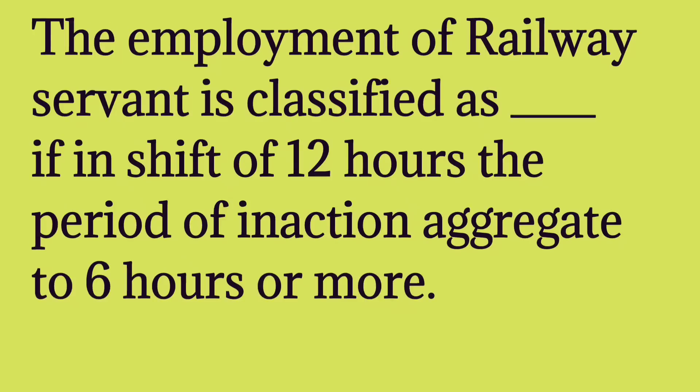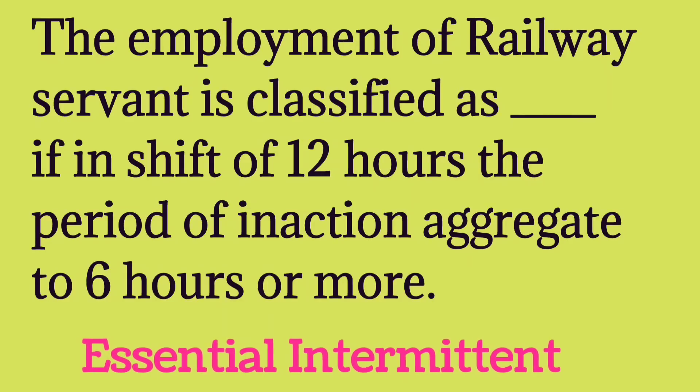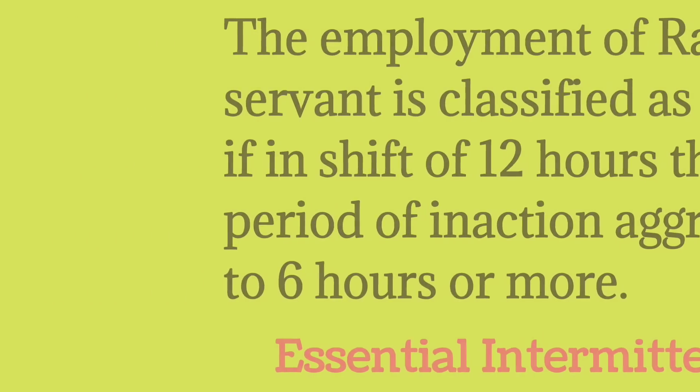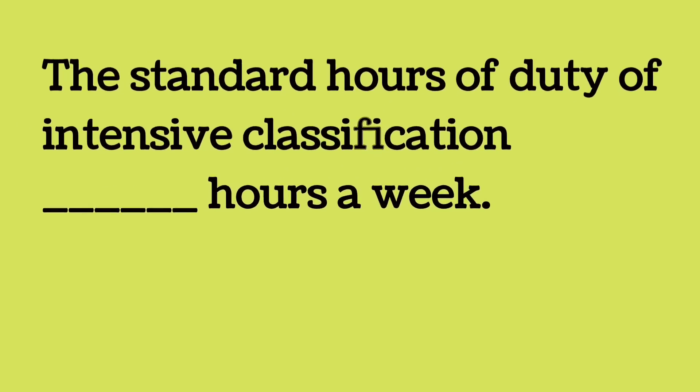The employment of a railway servant is classified as essential intermittent if in a shift of 12 hours the period of inaction aggregates to 6 hours or more. Normally, employees working 12 hours duty per day are classified as essential intermittent.